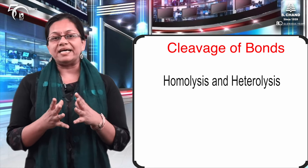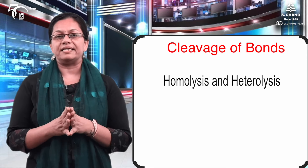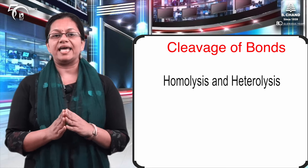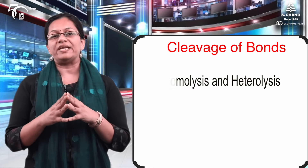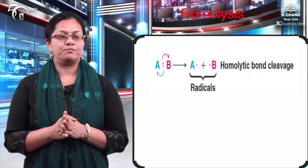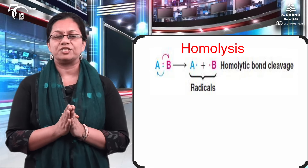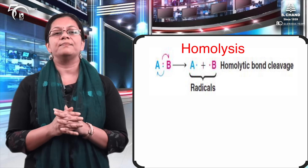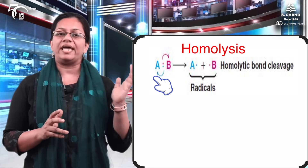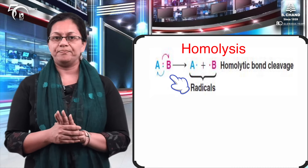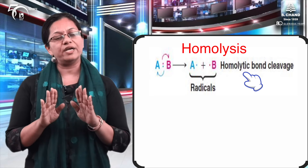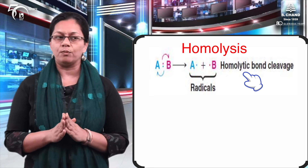What does similar or separate breaking mean? When a molecule breaks and an equal number of electrons go to both of the breaking atoms — that is, one electron goes to each — it is called homolysis. As shown in the equation, if compound AB has two electrons and one electron goes to A and one electron goes to B, this is homolytic cleavage — equal division of electrons between both atoms.